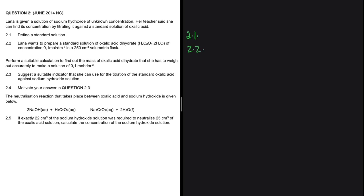For question 2.2, Elena wants to prepare a standard solution of oxalic acid dihydrate — we have the chemical formula — at a concentration of 0.1 moles per decimetre cubed in a 250 cm³ flask. We need to perform a suitable calculation to find the mass of oxalic acid dihydrate she has to weigh out accurately. We have the concentration of 0.1 mol/dm³ and the volume of 250 cm³.